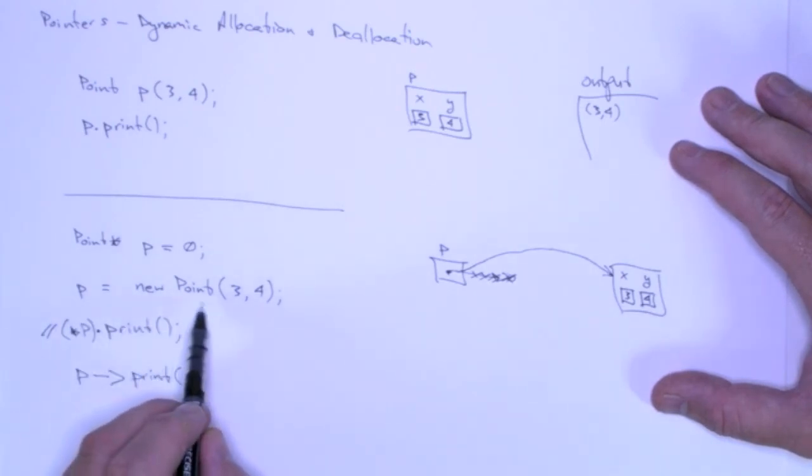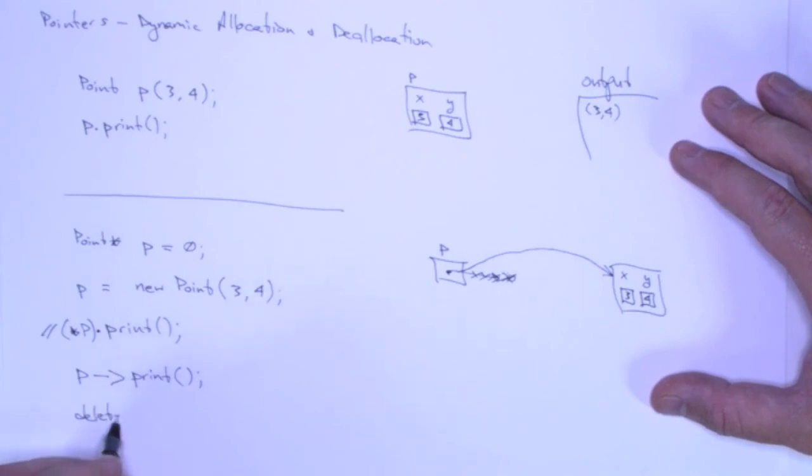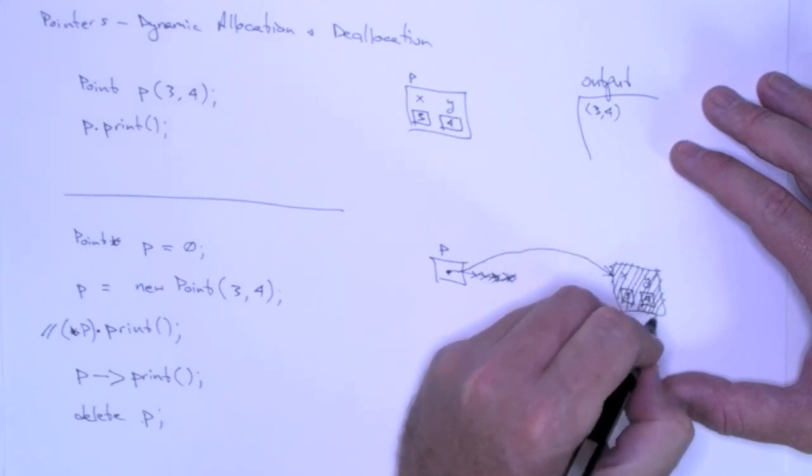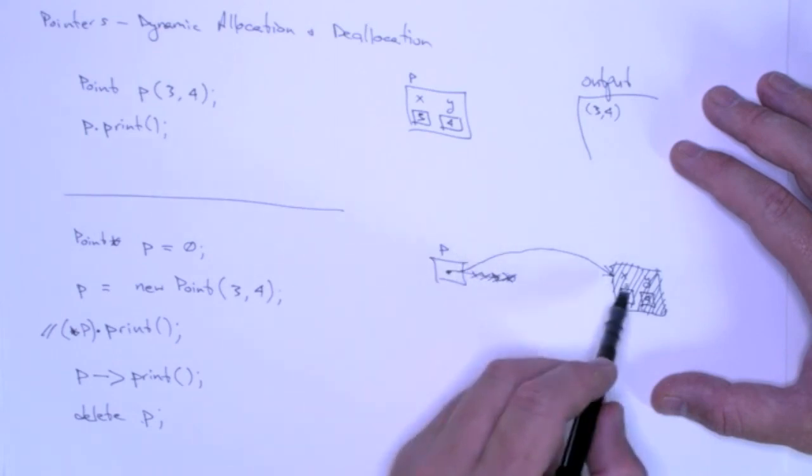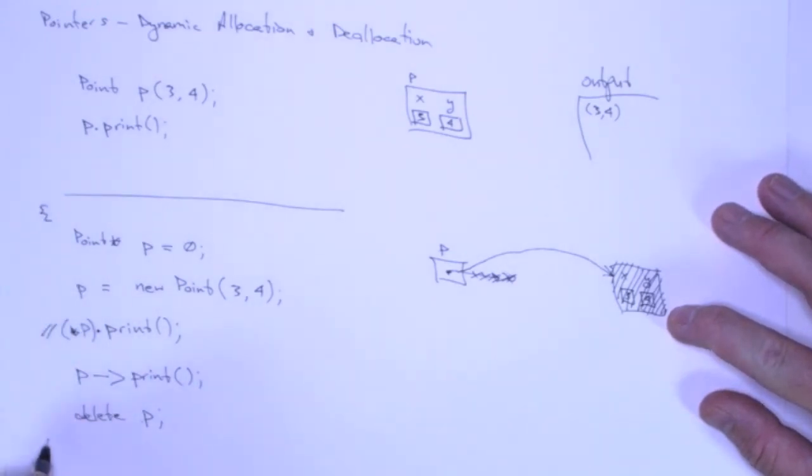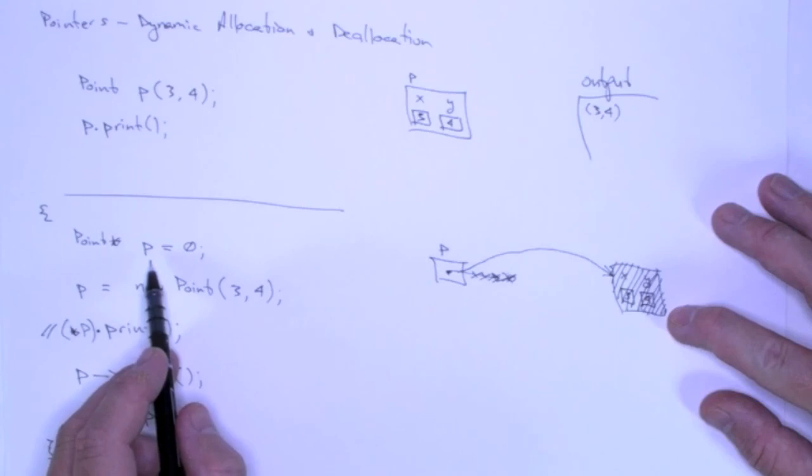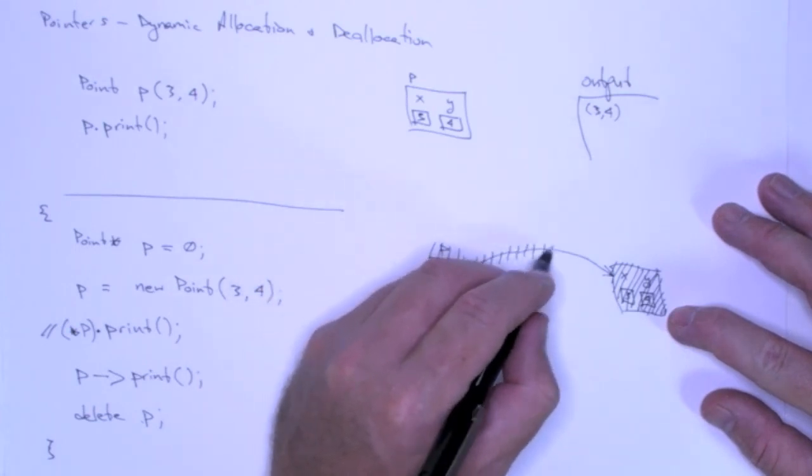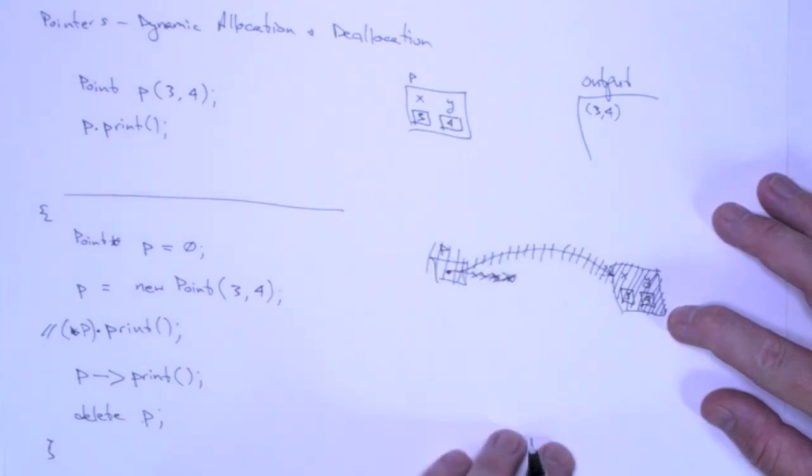And finally, because we allocated this point using new, we have to make sure that we deallocate it using delete. And so again, this does not affect the pointer p. It affects the point object that p points to. So this delete operator will delete the object that p points to, which is this point object here. So that's now deallocated. The pointer p still holds the address of where the point object was and then when we leave the scope of the block where we declared p, then it will be deallocated, this pointer. And then all of the memory that we utilized will be released or freed.